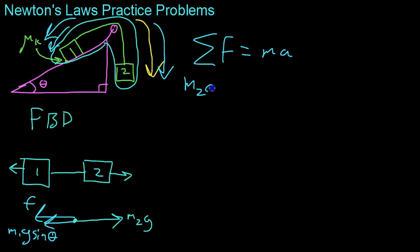So, we have M2G minus M1G sine of theta minus mu K times the normal force, which is M1G or M1G cosine theta equals the mass we're accelerating, which is both masses, M1 and M2, times acceleration. And then, from there, to solve for the acceleration, all you have to do is divide through by this mass.